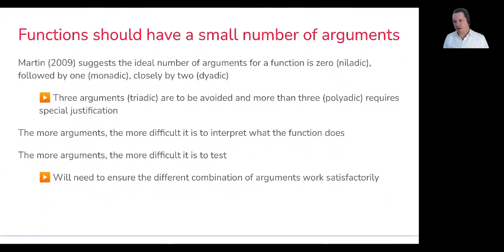Functions should have a small number of arguments. So this is going to be perhaps a little extreme for some of the things we're doing in this course. I know not all of the MP prompts will likely enforce this notion, but it's definitely something to be considerate of or cognizant of and really try to incorporate this practice as you're going through this course and later ones. So Martin, again, in the clean code textbook suggests that the ideal number of arguments for a function is zero followed by one and closely by two. He then goes on to specify that three arguments are to be avoided and more than three really requires special justification if you're going to take that approach.